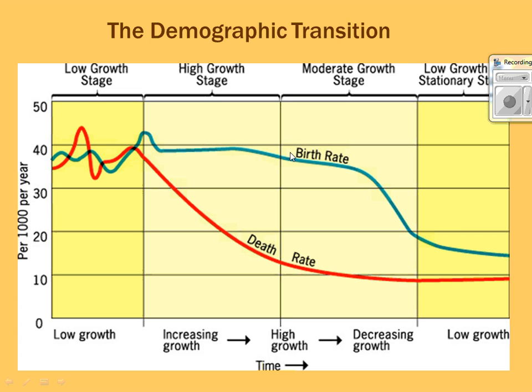Transitioning into stage three — moderate growth — you still have more births than deaths, but the birth rate is coming down. Things like industrialization cause people to move to cities, not needing babies to work farms. Women becoming more educated means they may not depend on having many children and may have more access to family planning.